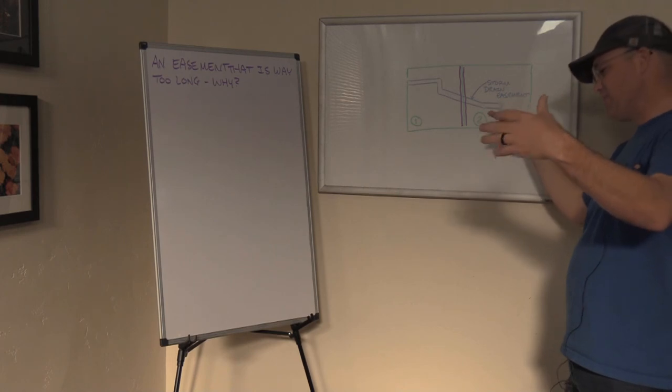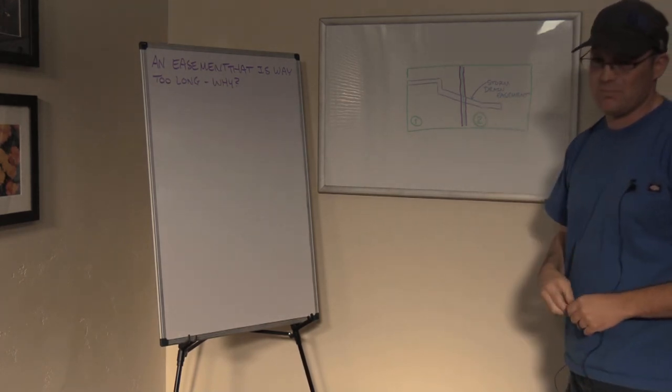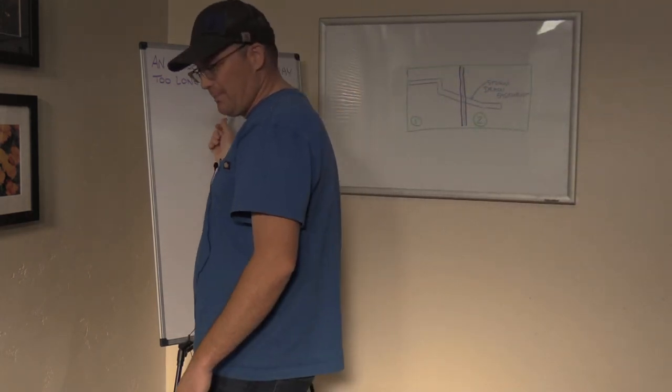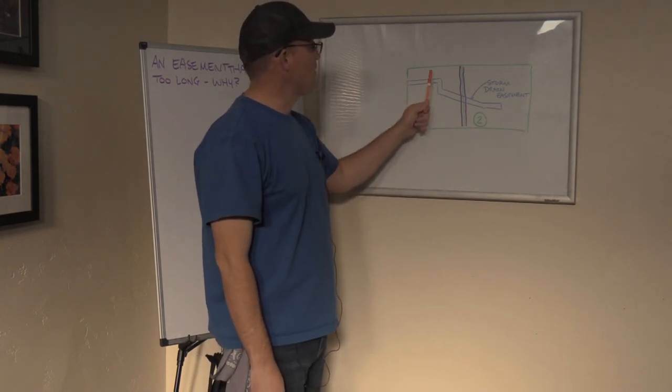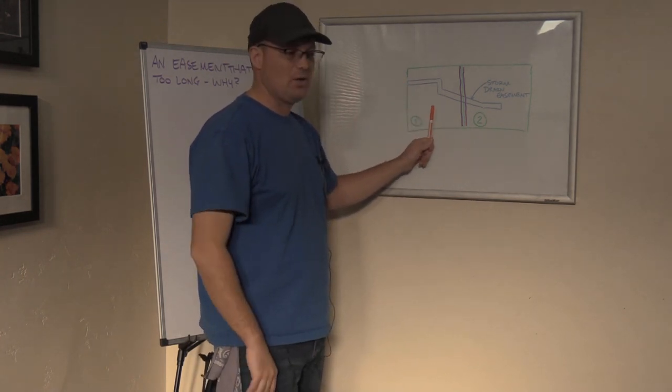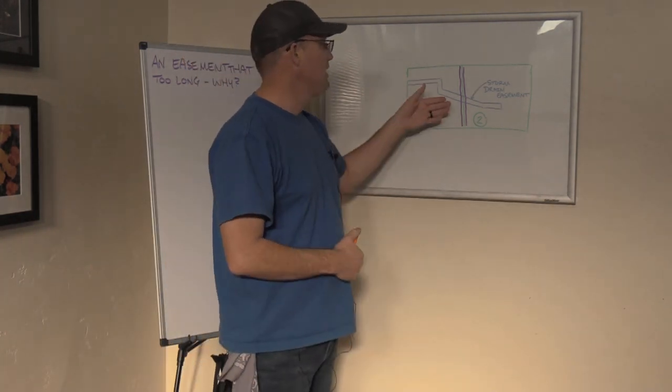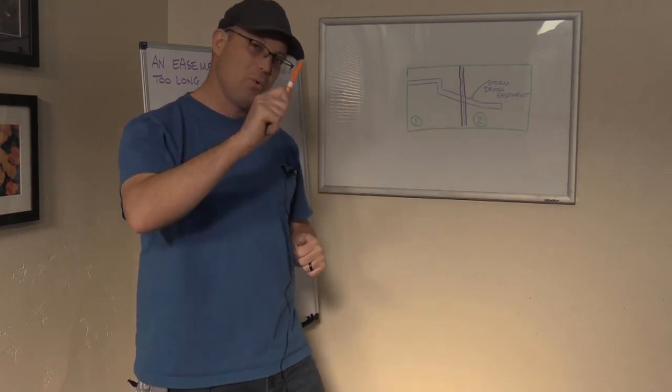Without putting together kind of the contextual information here, that wasn't clear in this particular easement that we were reviewing. So why was this easement way too long? It was way too long because they didn't know where this property line was. They wanted to make sure they covered all of the ditch that was on this parcel, and they didn't include the proper limiting language in the land description or the conveyance to the drainage district. So don't make that same mistake.